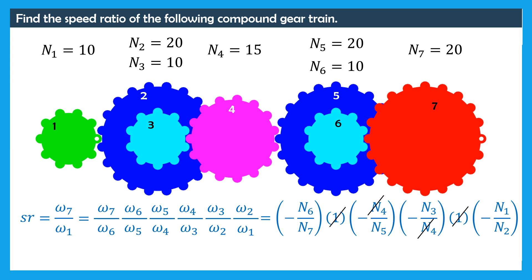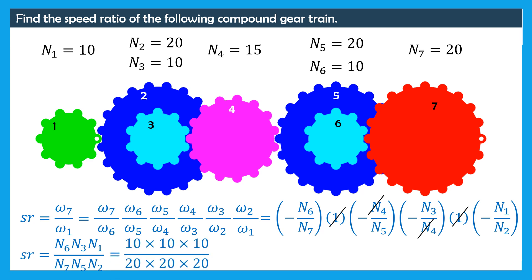After some simplifications, the speed ratio is equal to N6 times N3 times N1, divided by N7 times N5 times N2. The speed ratio equals the product of the number of teeth of the driver gears (1, 3, and 6) divided by the product of the number of teeth of the driven gears (2, 5, and 7). Substituting the values, the speed ratio is equal to 10 times 10 times 10, divided by 20 times 20 times 20, which gives 1 over 8.